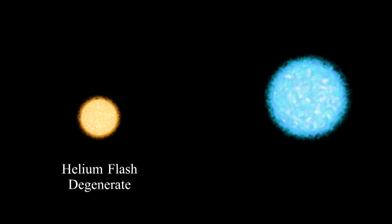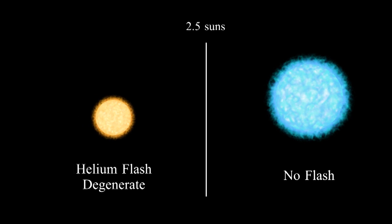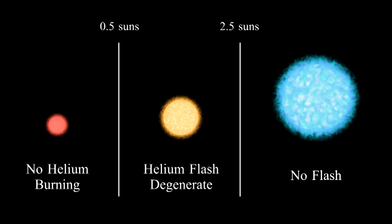Heavier stars don't have helium flashes. Above two and a half solar masses, they get hot enough to burn helium before their cores become degenerate. On the other hand, small stars never burn helium. Stars below half a solar mass never get hot enough to burn helium.